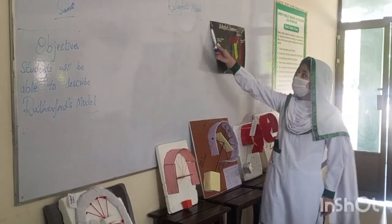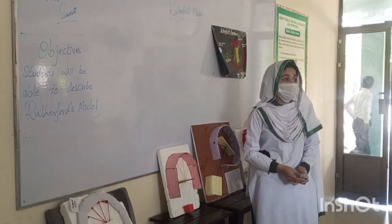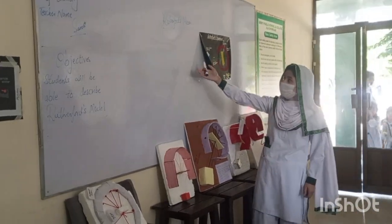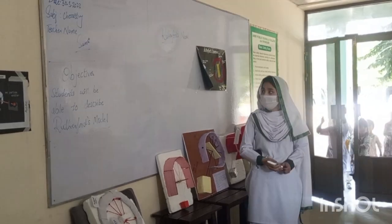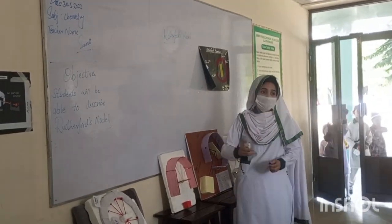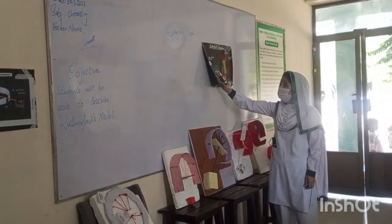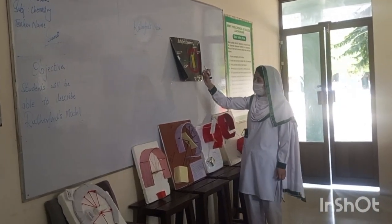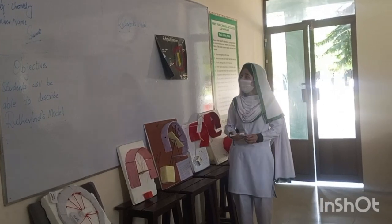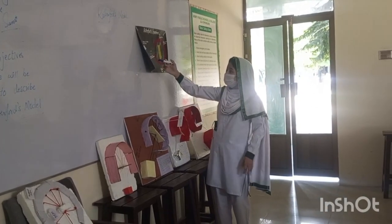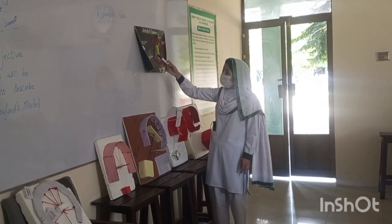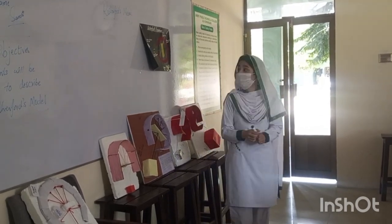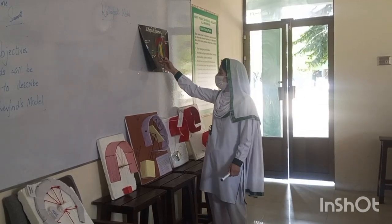Rutherford is a scientist who performed an experiment to know about the arrangement of electrons and protons in atoms. He bombarded a very thin gold foil, about 0.004 cm in thickness, with alpha particles. We obtained alpha particles from polonium. Alpha particles are helium nuclei that are double positively charged.